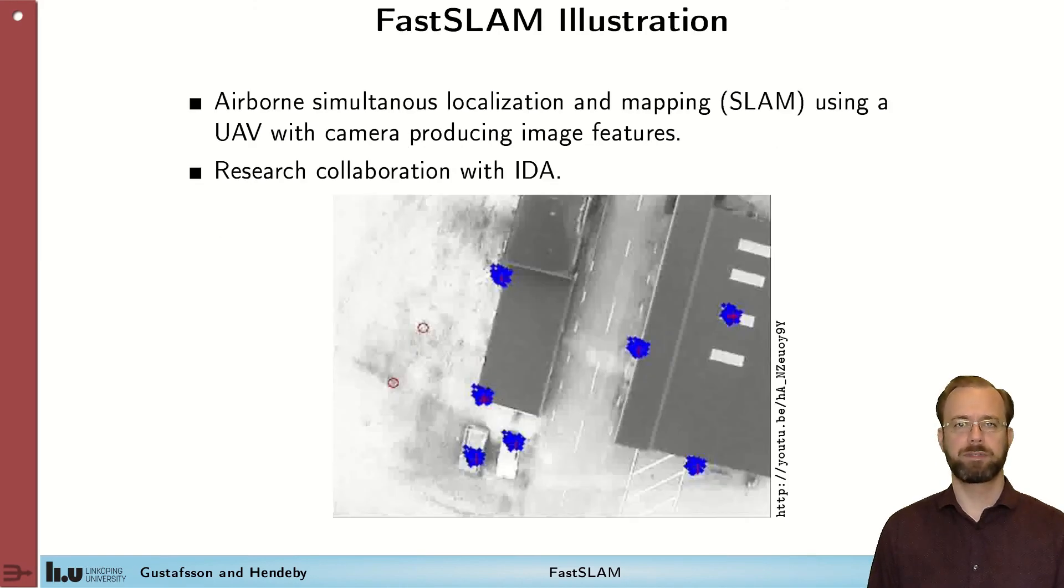I'll finish with an illustration of FastSLAM before we conclude this video. It's an example of a project that was jointly run by Automatic Control and EDA. It's an airborne UAV looking down using a camera, where we in this case use FastSLAM for positioning. We will see landmarks with red dots and blue particles representing the map.